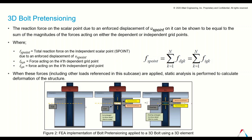The reaction force on the scalar point due to an enforced displacement on it can be shown to be equal to the sum of the magnitudes of the forces acting on either the dependent or independent grid points. When these forces are applied, static analysis is performed to calculate the deformation of the structure.